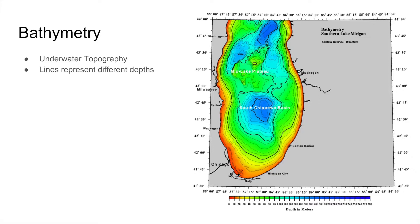For example, in this image of southern Lake Michigan, we see that the red rainbow color near the shores is the shallower water, and as you go deeper into the lake, you can see the color turn a darker shade of blue and you can see the rings that differentiate the different depths of the lake.